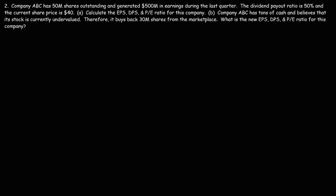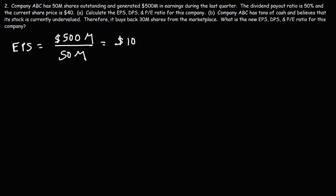Now let's move on to the next problem. Company ABC has 50 million shares outstanding and generated $500 million in earnings during the last quarter. The dividend payout ratio is 50% and the current share price is $40. Calculate the EPS, DPS, and P/E ratio for this company. The EPS is $500 million divided by 50 million shares — canceling a zero, that's 50 divided by 5 — which is $10 per share.